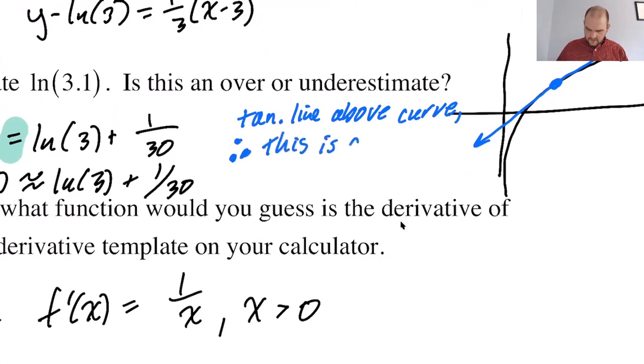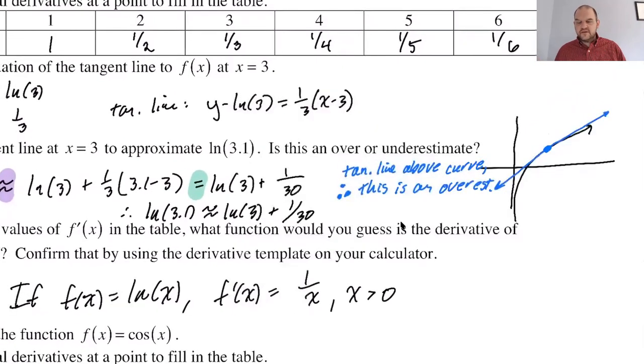This is an overestimate. It's definitely an overestimate because the tangent line is above the curve. If you remember, when the tangent line is above the curve, we say that the curve is concave down. So if the tangent line is above, the curve is concave down. If the tangent line is above, you'll get overestimates. It all makes sense.